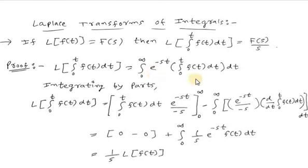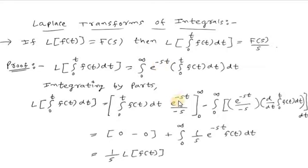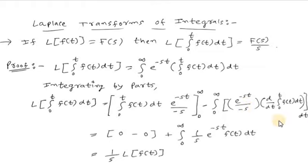We find this integral using integration by parts. We take u = integration from 0 to t of f(t) dt and v = e^(-st). So u stays as is, and integration of v gives e^(-st)/(-s). The result is: [u · e^(-st)/(-s)] from 0 to infinity, minus integration from 0 to infinity of the derivative of u times e^(-st)/(-s) dt.